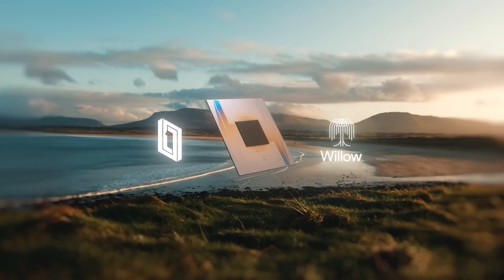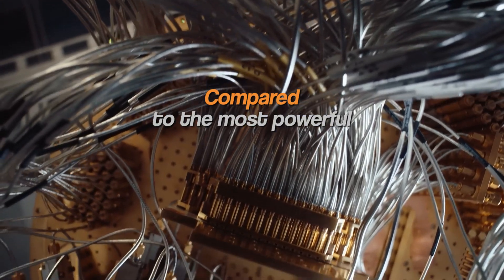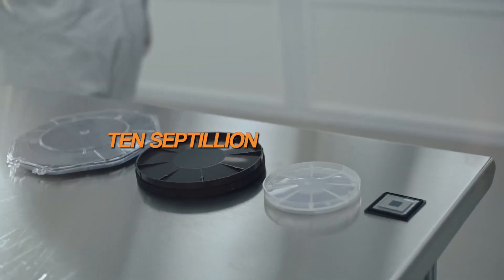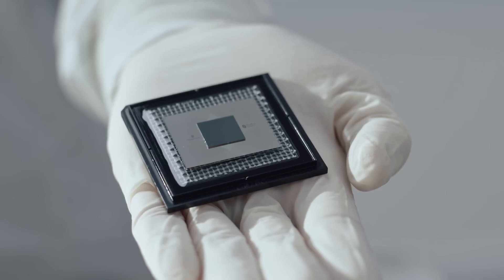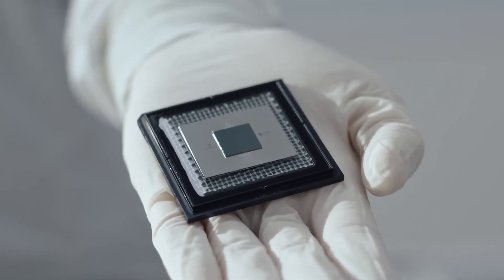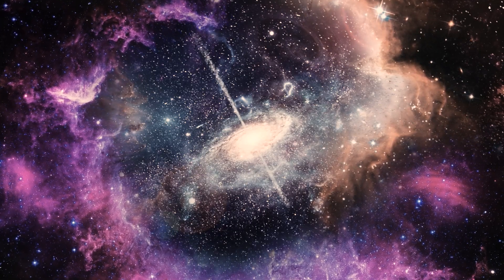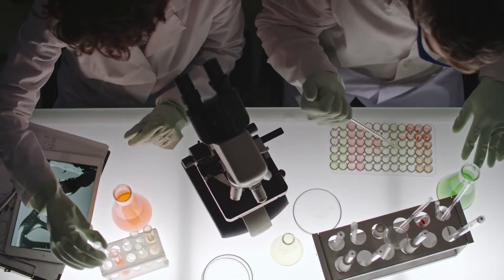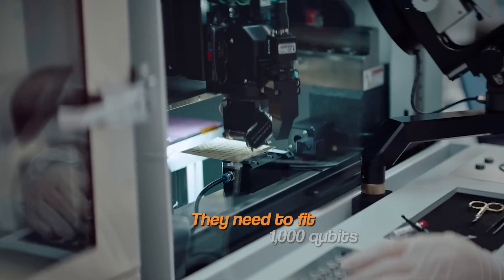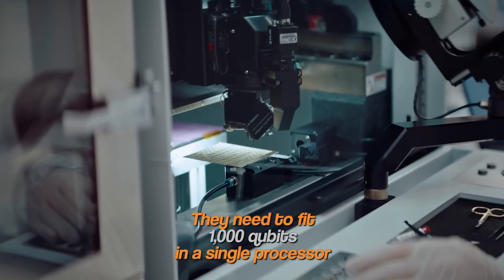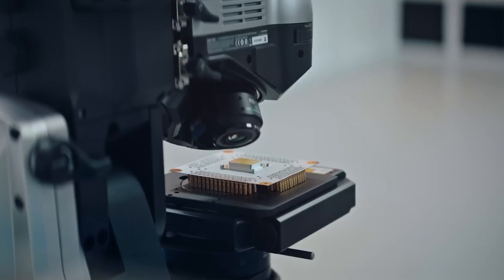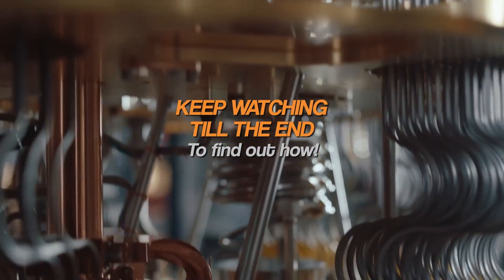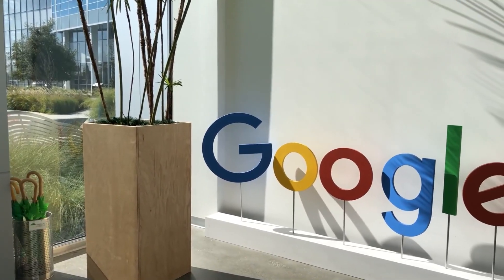Google made a gigantic leap with its Willow chip. Compared to the most powerful classical supercomputer, this one is 10 septillion times better—that's trillions upon trillions of times more than the lifespan of the universe. But before quantum computers can be used to create life-saving drugs that don't exist right now, they need to fit 1,000 qubits in a single processor. For the next quantum leap, keep watching till the end to find out how.